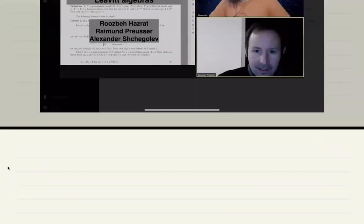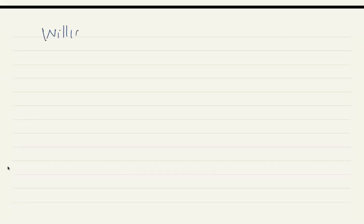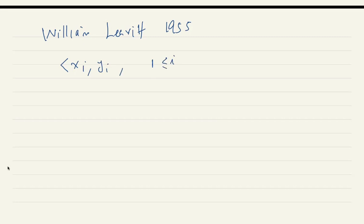Let me remind you about the algebra defined by William Leavitt. I looked at the paper today, and it started in 1955. He introduced this algebra: you get a bunch of symbols, and this is a free unital k-algebra.